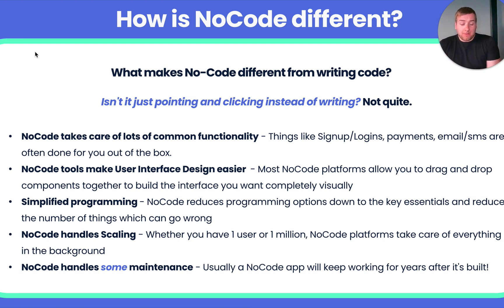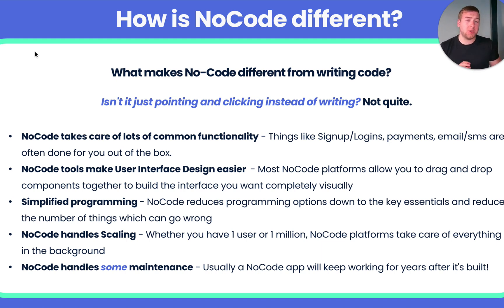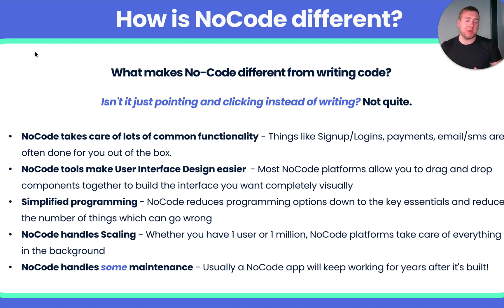NoCode also makes programming simpler. The amount of things you can do with a programming language is endless, and NoCode will quite often simplify that down. Some tools won't simplify it at all; others will limit you to a little bit of programming. But quite often this makes things faster because you don't have to worry about lots of little edge cases. Because NoCode simplifies the kind of programming you can do, it also reduces the number of things that can go wrong — and that's often half the battle in traditional programming.